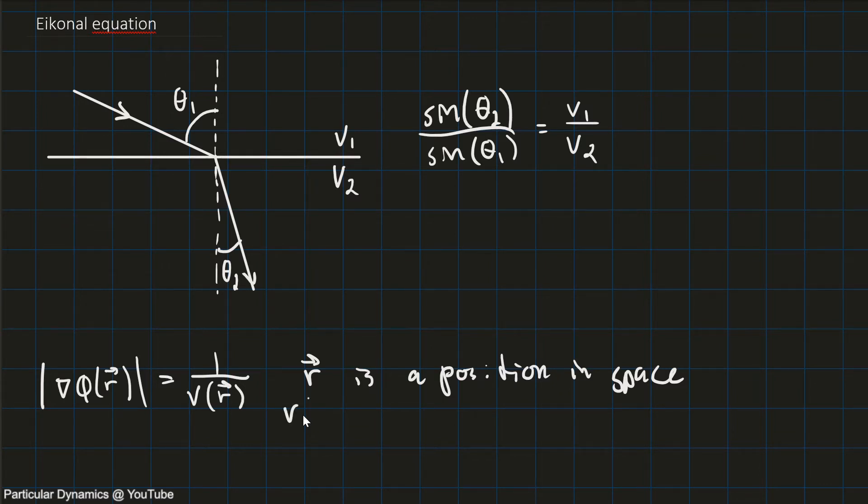And we have that v of r is the speed of light at position r. Contrasting this with Snell's Law, where the speed of light could only have one of two values depending on where the ray was propagating. In this case, the speed of light v can change smoothly depending on the value of r. You can have a unique speed of light everywhere.